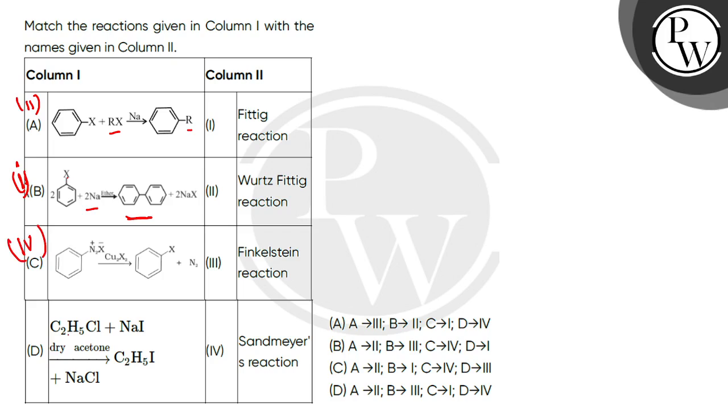And in D, you are seeing C2H5Cl, which is an alkyl halide. This reaction is with NaI in dry acetone. You will find C2H5I, which means chloride becomes iodide. When you convert chlorides into alkyl iodides in the presence of sodium iodide, this reaction is called Finkelstein reaction. So this will be third.